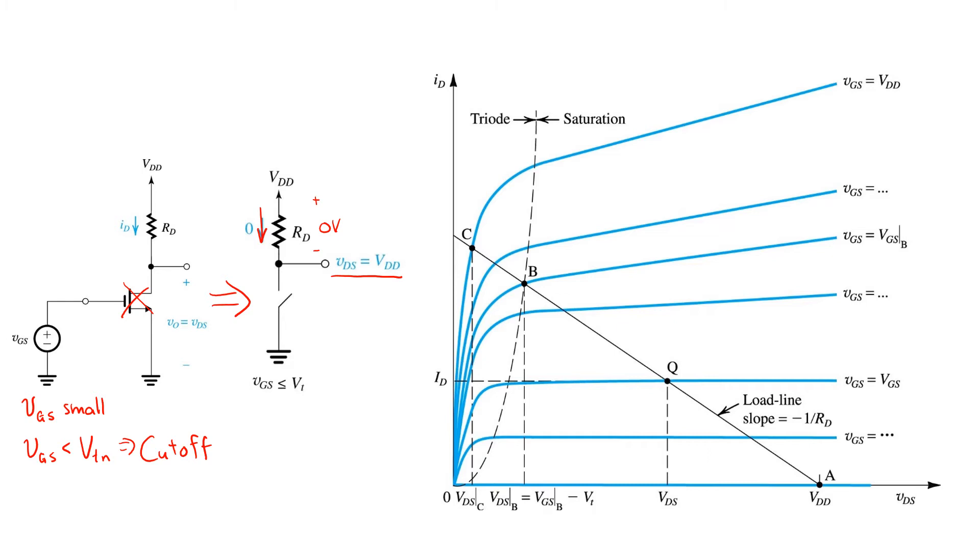This corresponds to the point A on this plot on the right. The line at the very bottom is the IV relationship when the transistor is in cutoff.